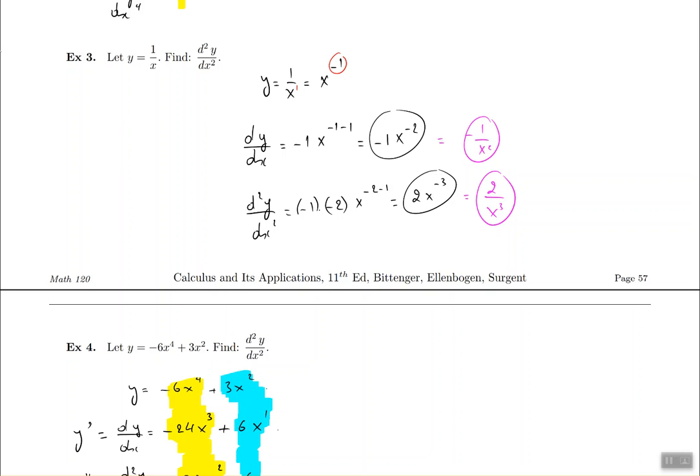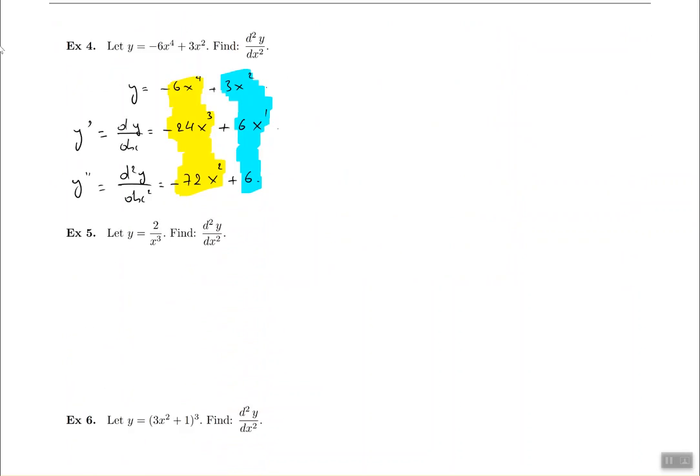Mimic those steps in order to do example 5 with the 2 divided by x to the power of 3. Rewrite it and then find the first and the second derivative, and I'll give you the answer in a few seconds. Take a moment to pause the video here please.